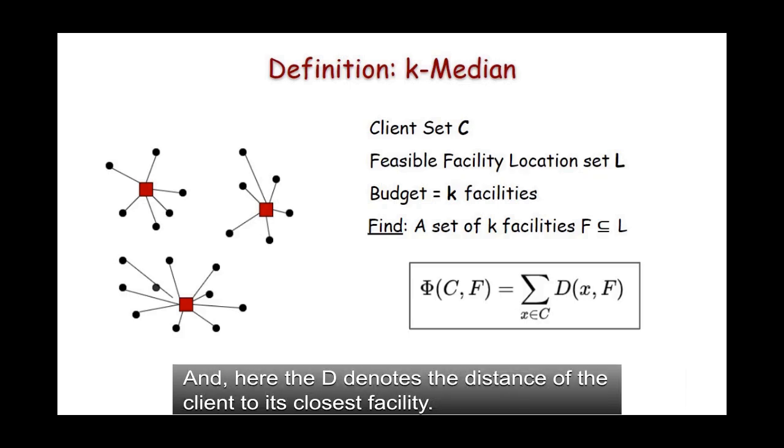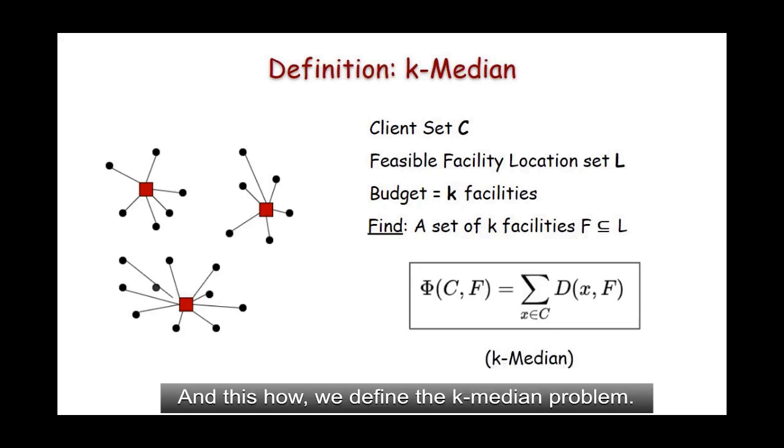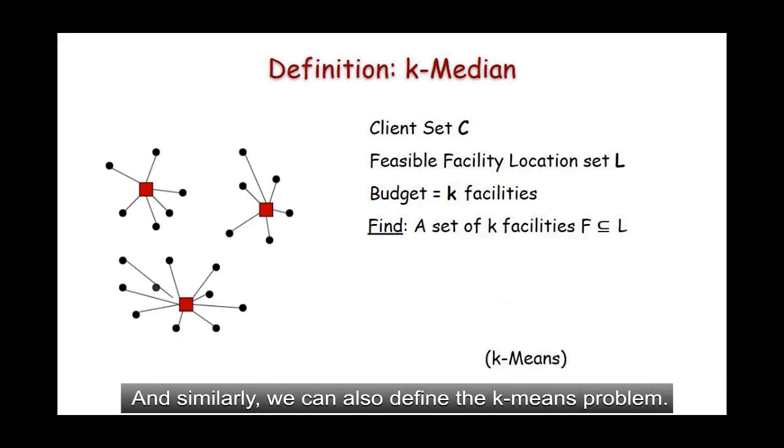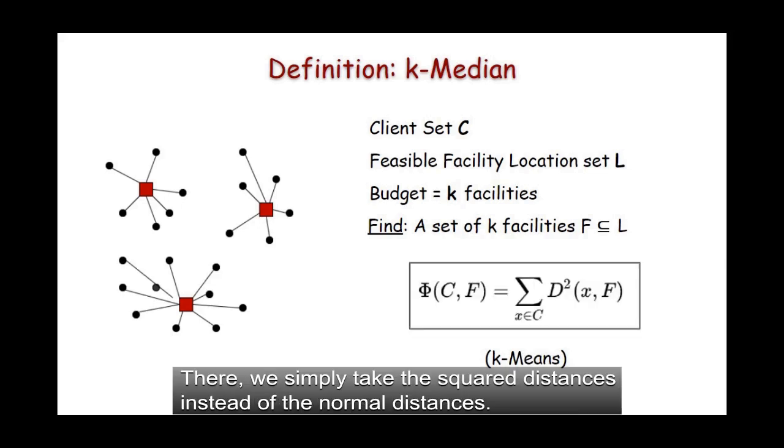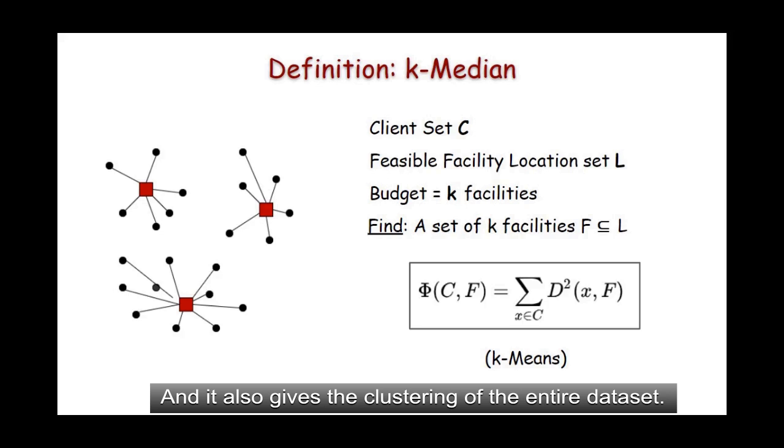And here, capital D denotes the distance of the client to its closest facility. And this is how we define the k-median problem. And similarly, we can also define the k-means problem where we simply take the square distances instead of normal distances. And it also gives the clustering of the entire dataset.